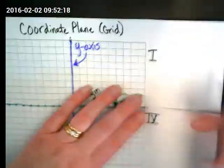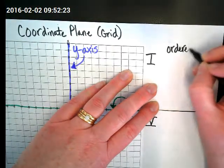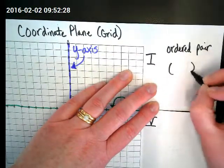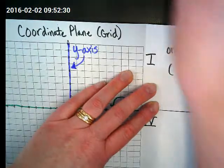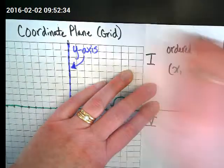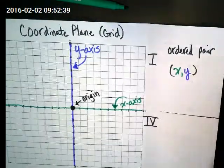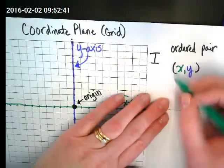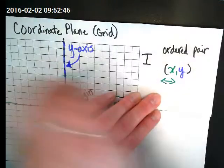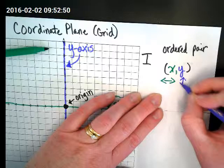And then over here is our final vocabulary term for today, an ordered pair. Ordered pairs are always in parentheses. The x term comes first. The y term comes second. And I want you guys to think about this as the x goes across left or right, and the y goes up or down.